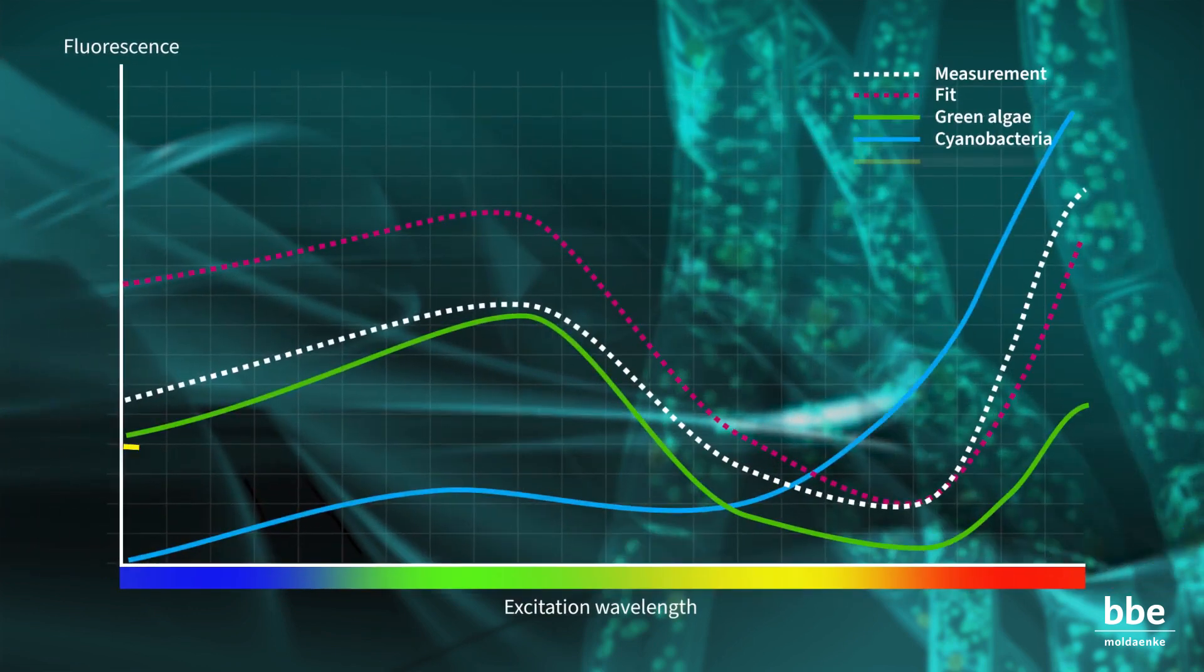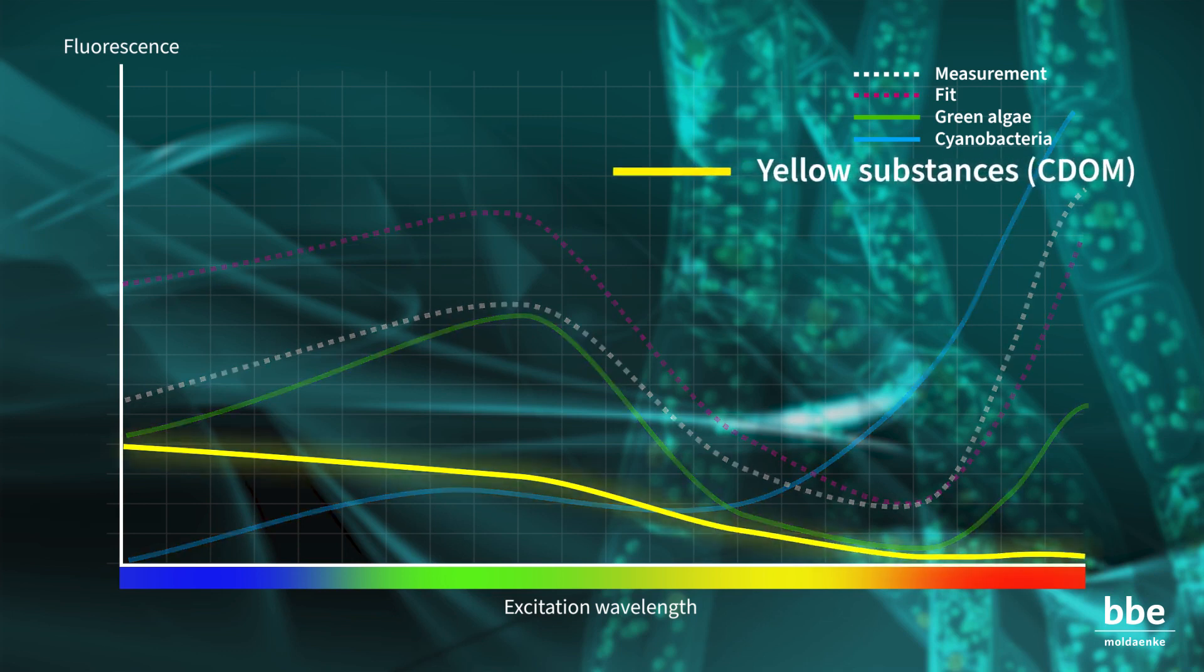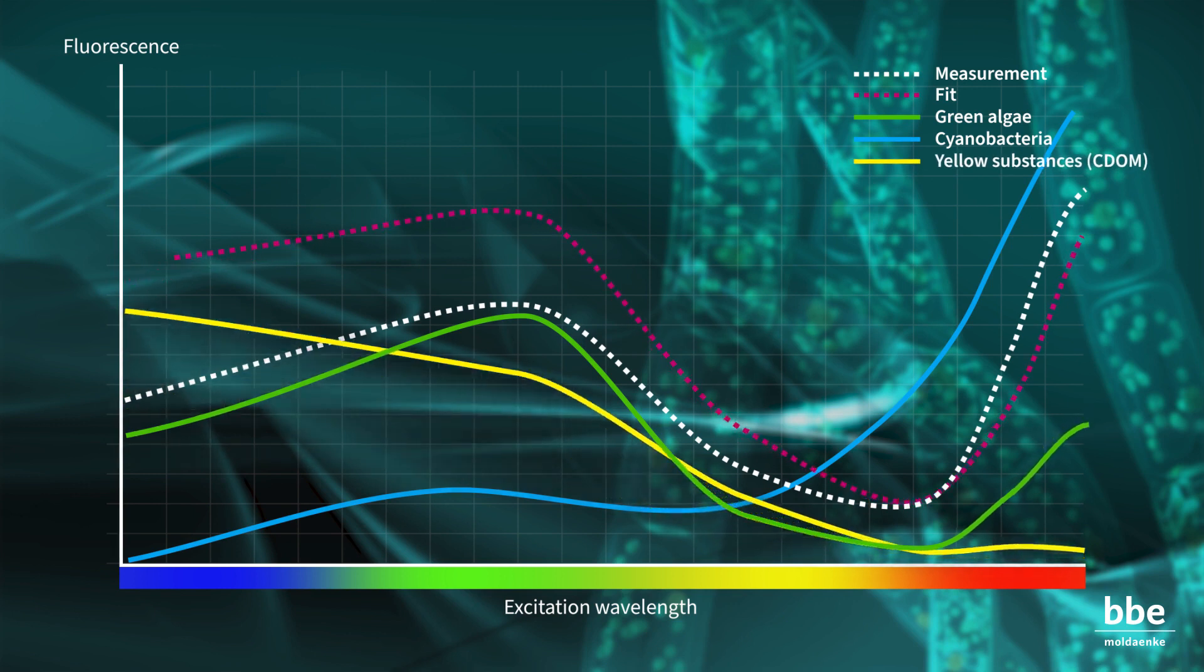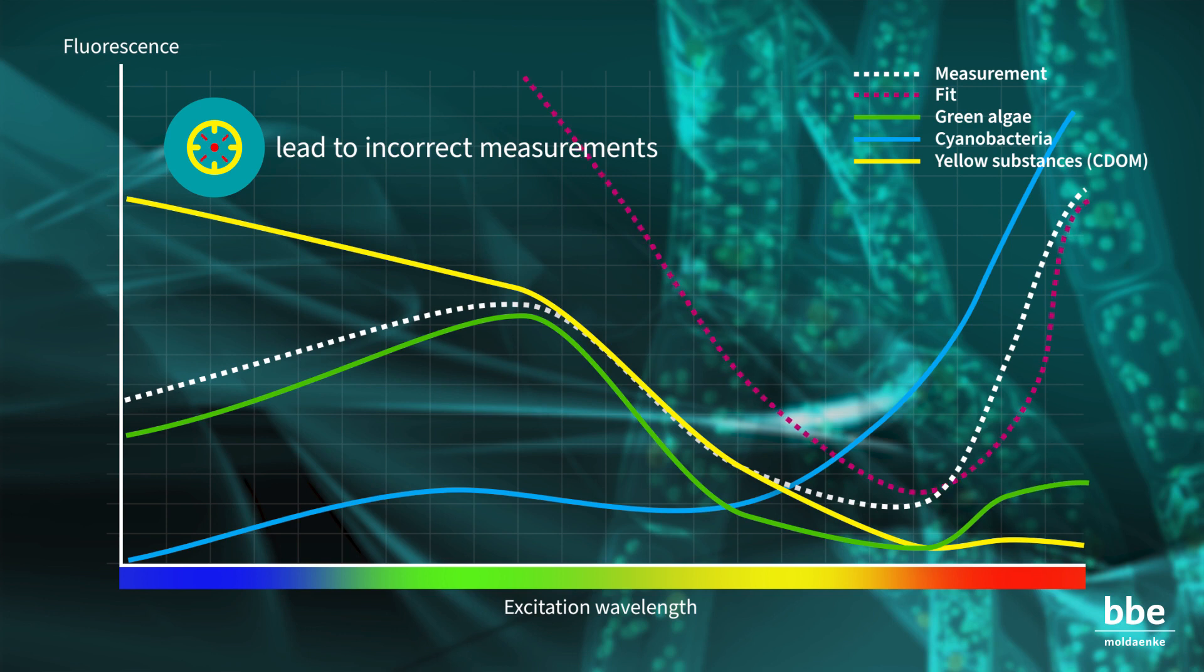An important issue is the effect of so-called yellow substances, or color-dissolved organic matter. These compounds have interfering fluorescence effects and will lead to incorrect measurements.